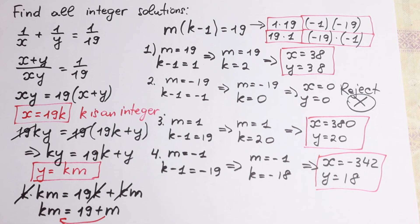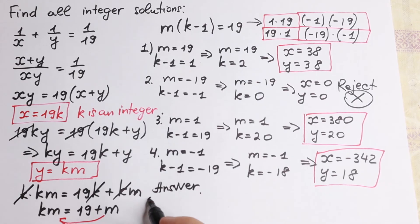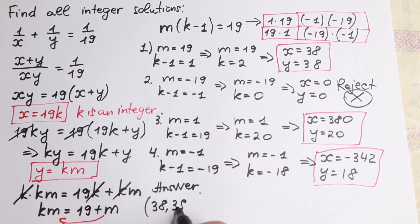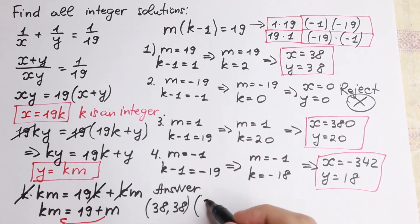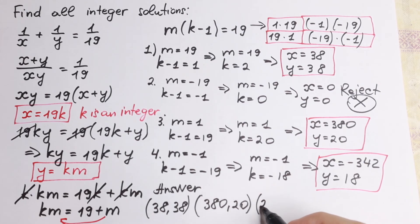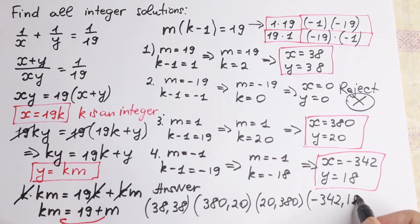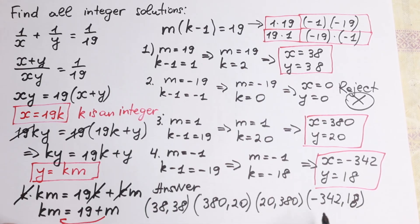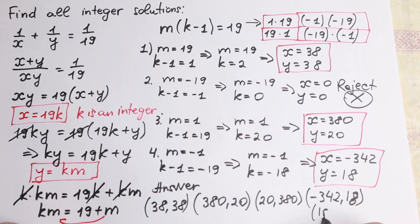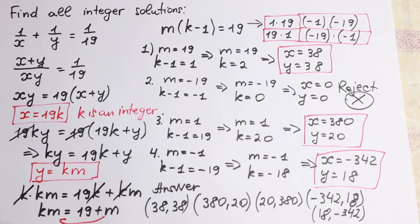Let's write our final answer. The solution pairs are: (38, 38), (380, 20), (20, 380), (minus 342, 18), and (18, minus 342). As you can see, we have 5 pairs of solutions in total.